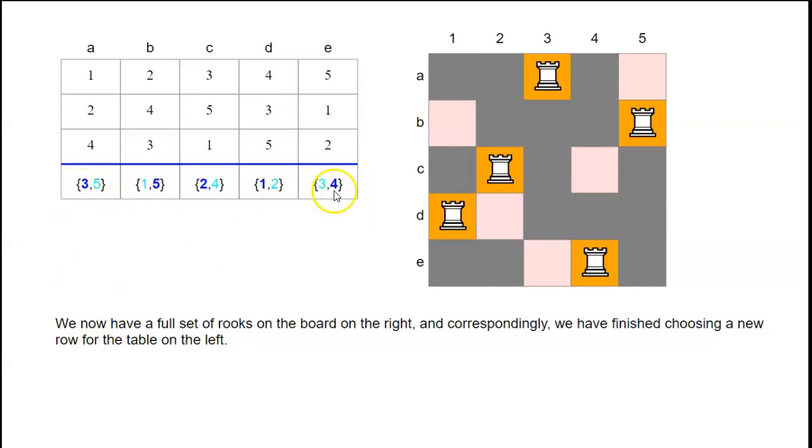So across there we've got each number appearing precisely once, and also we've got no repeats in any column, because we only allowed ourselves to choose from 3 and 5, and they don't appear here, so we can't have created any clash like that. So we've succeeded in adding a new row according to the rules.